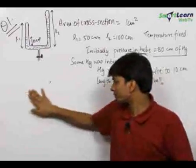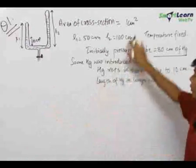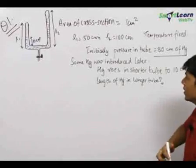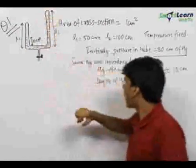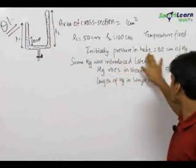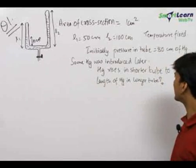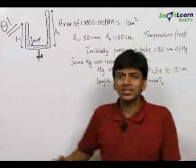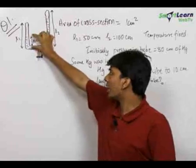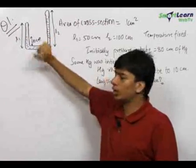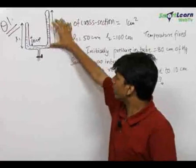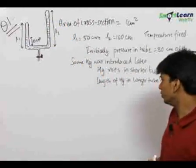Let us start with the first question. The area of cross section of the tube is given to be 1 centimeter square. The length of the two tubes is given, and initially the tube was empty and the pressure of the gas inside the tube was 80 centimeters of mercury. Now some mercury is introduced and it rises to a height of 10 centimeters in the smaller tube.